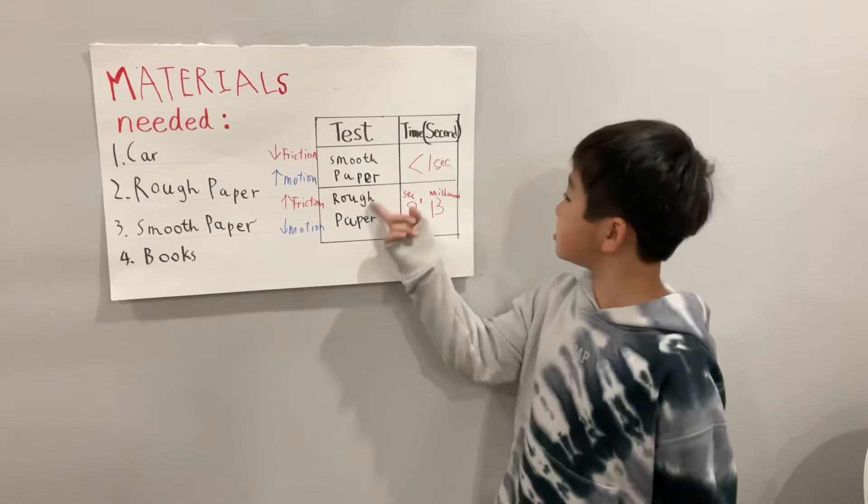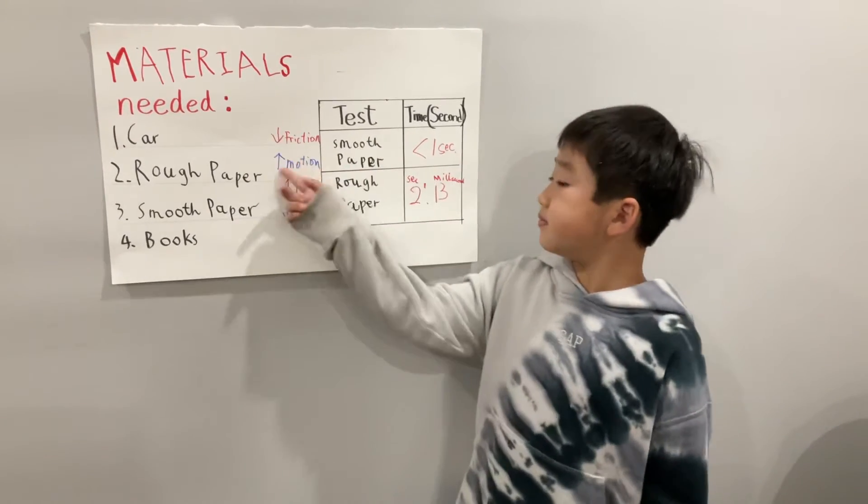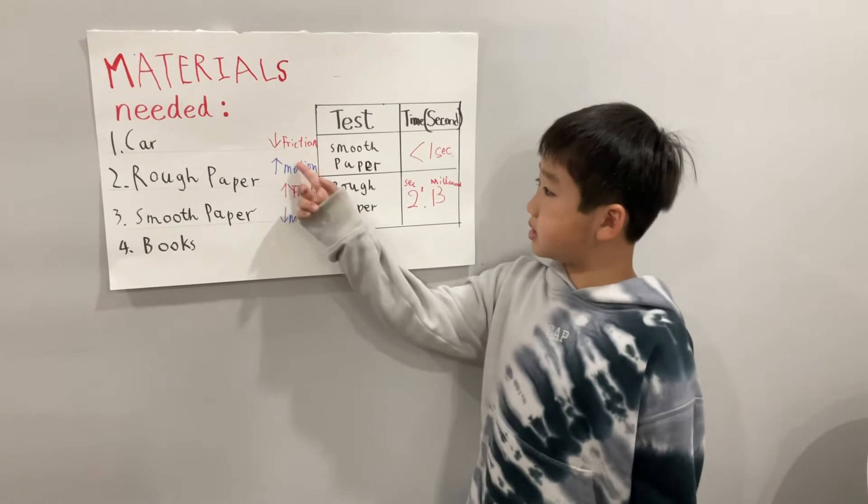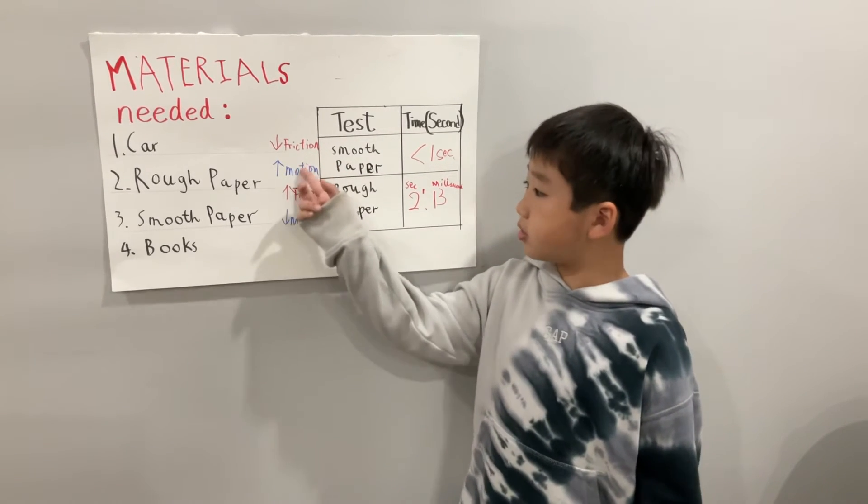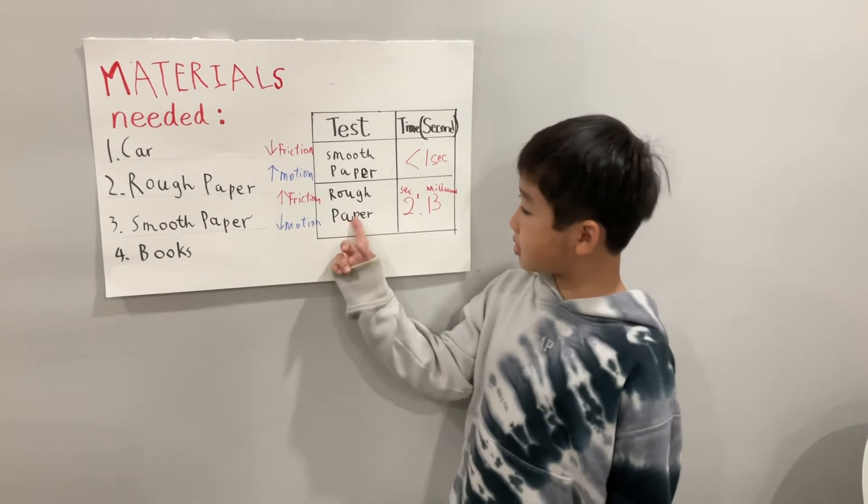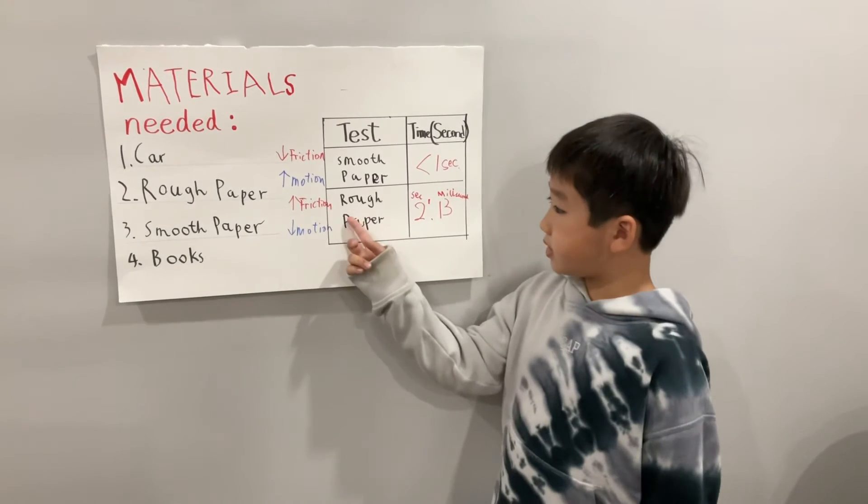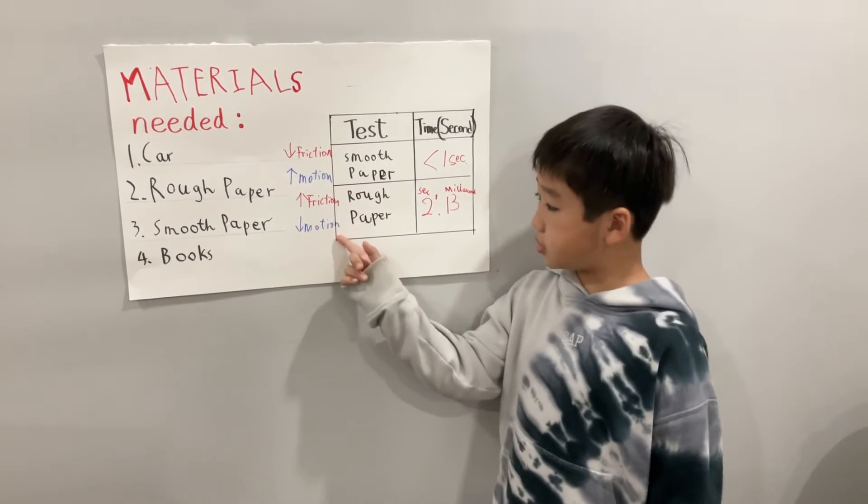Here are the results. The smooth paper has less than one second because it has less friction and more motion. The rough paper has more than two seconds because it has more friction and less motion.